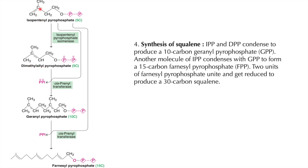Isomerization of isopentenyl pyrophosphate occurs by the enzyme isopentenyl pyrophosphate isomerase, moving the double bond to give dimethylallyl pyrophosphate. Both are 5-carbon units. When isopentenyl pyrophosphate combines with dimethylallyl pyrophosphate in a head-to-tail manner, you get geranyl pyrophosphate, a 10-carbon unit.